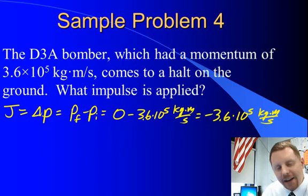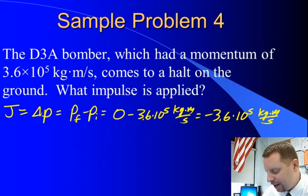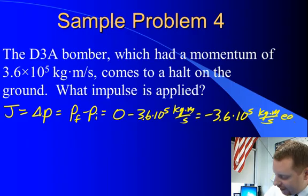Now, since we have defined east as the positive direction, our momentum, or pardon me, our impulse is 3.6 times 10 to the fifth kilogram meters per second, negative. So we could also write this, if this is east,